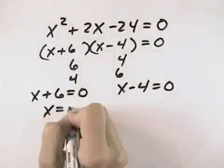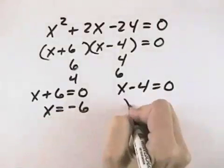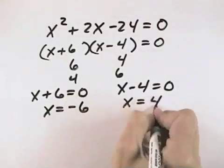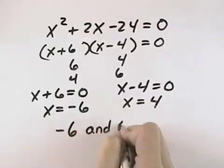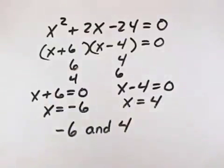Subtracting 6 from both sides, we get x equals negative 6. Adding 4 to each side, we get x equals positive 4. So that means negative 6 and positive 4 are the solutions to our quadratic equation.